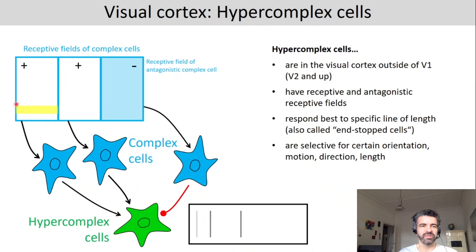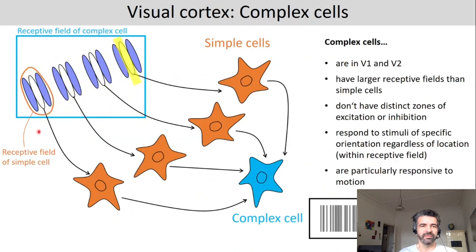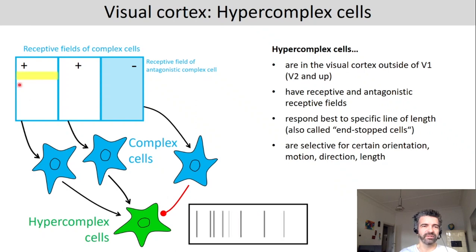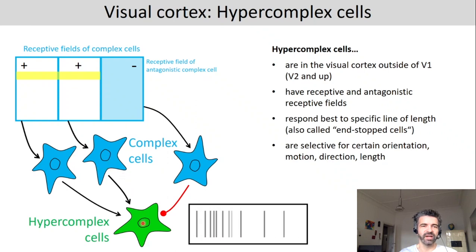The receptive field of a complex cell feeds into the hypercomplex cell. All three combined form the receptive field of the hypercomplex cell. So if we have a line of light, we get some increase in the firing rate of the hypercomplex cell — and it doesn't matter where in the field it is. But if the line is longer, there's more activation, because now two complex cells are firing and giving input to the hypercomplex cell.